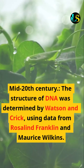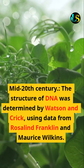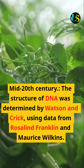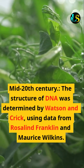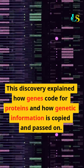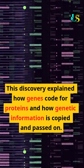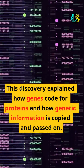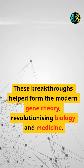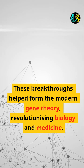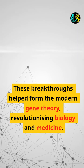In the mid-20th century, the structure of DNA was determined by Watson and Crick, using data from Rosalind Franklin and Maurice Wilkins. This discovery explained how genes code for proteins and how genetic information is copied and passed on. These breakthroughs helped form the modern gene theory, revolutionising biology and medicine.